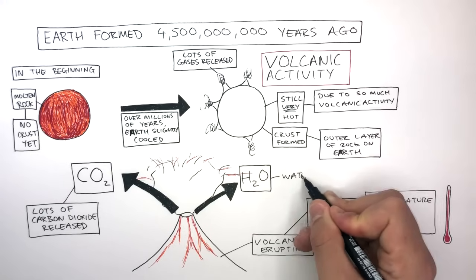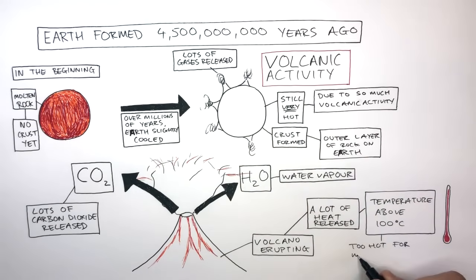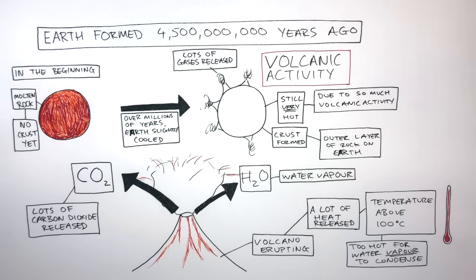A lot of water vapour would have been released due to volcanic activity. It was too hot for the water vapour to condense, as the temperature of the Earth was above 100 degrees Celsius, which is water's boiling point. Other gases were also released, but in smaller proportions.